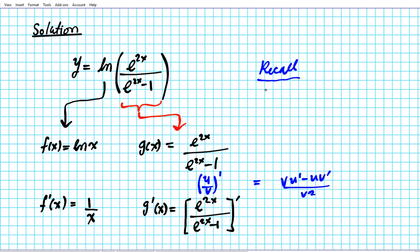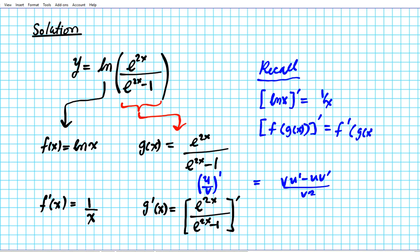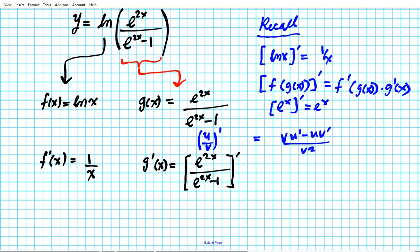Some other formulas to keep in mind for this problem: the derivative of ln x is 1 over x, and the derivative of a composite function f of g of x is the derivative of the outer function evaluated at the inner, times the derivative of the inner function. We're using the quotient rule here, and you also have to remember that the derivative of e to the x is just e to the x.